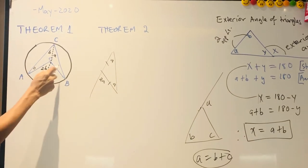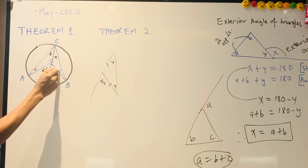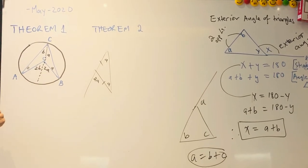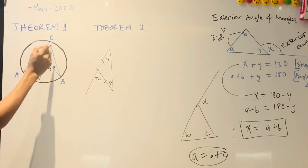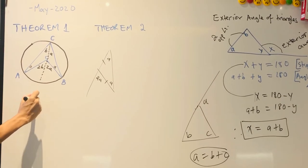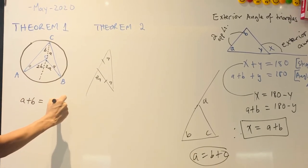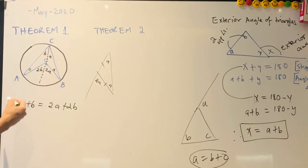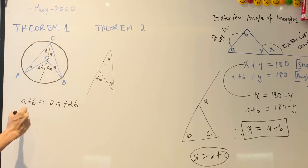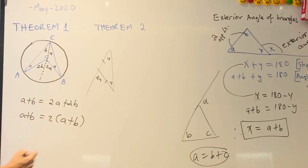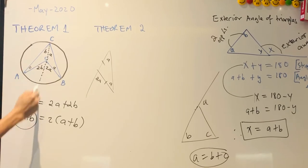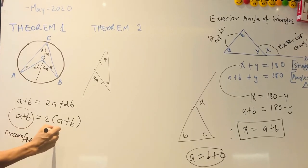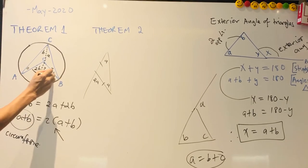The same applies to the other side: the base angles are both b, so the angle at the center is 2b. From this, we can see that the angle at the circumference is a plus b, while the angle at the center is 2a plus 2b. So a plus b equals 2(a plus b). The angle a plus b is the angle at the circumference, and 2a plus 2b is the angle at the center.